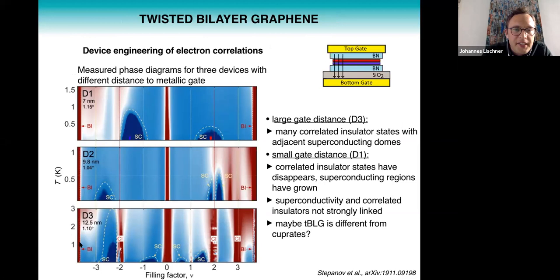So to test this hypothesis we teamed up with an experimental group in Barcelona who made three different devices. Device d3 has a thickness of this boron nitride film of 12.5 nanometers, device d2 has a thickness of 9.8 nanometers, and device d1 has a thickness of 7 nanometers of this boron nitride film that separates the bilayer from the metallic gates. And then for these three devices they measure the phase diagram.